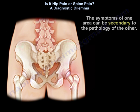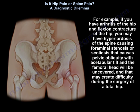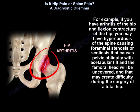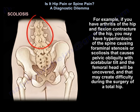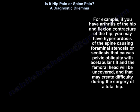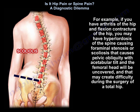The symptoms of one area can be secondary to the pathology of the other. For example, if you have arthritis of the hip with a flexion contracture, you may develop hyperlordosis of the spine causing foraminal stenosis, or scoliosis that causes pelvic obliquity with subtle tilt — and the femoral head will be uncovered, creating difficulty during total hip surgery.